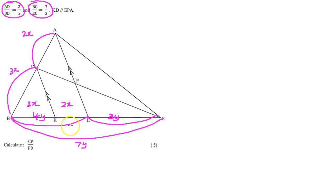Now we're going to write that in a statement: AD over BD is equal to KE over KB, and that is because KD is parallel to EPA. That is the proportion theorem, or we can say line parallel to third side of triangle, and that line is equal to 2x over 3x.